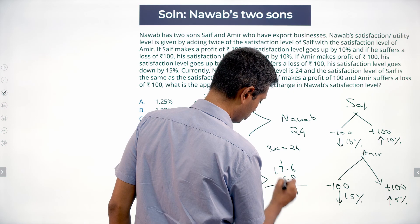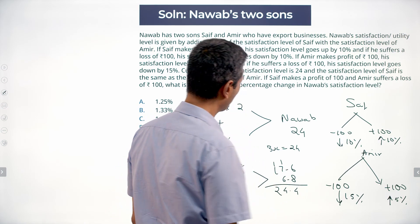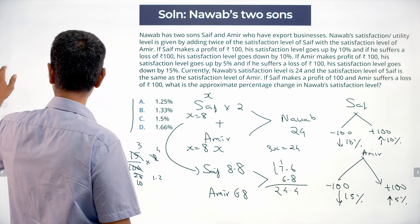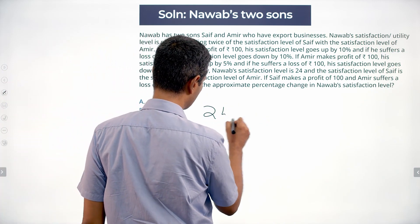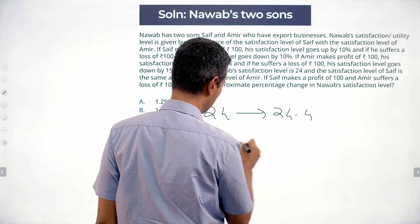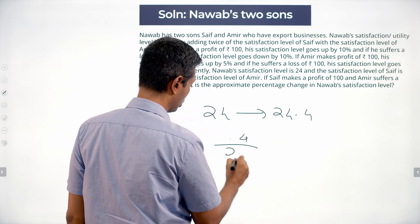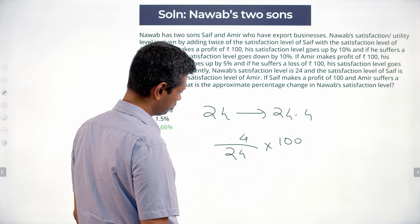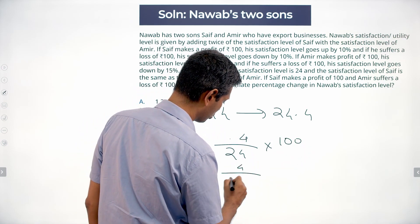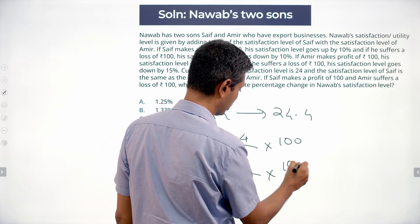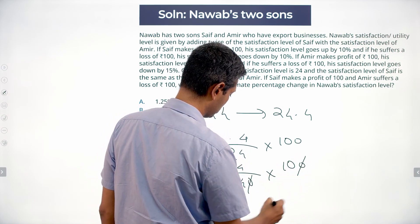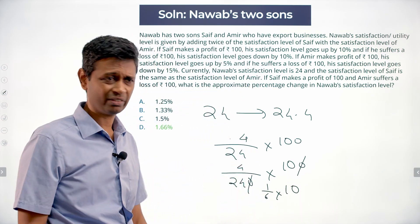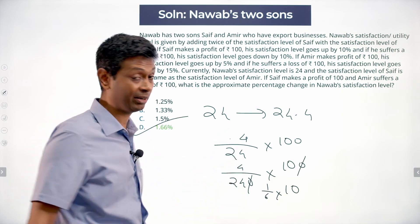17.6 + 6.8 = 24.4. So Nawab goes from 24 to 24.4. The percentage change is 0.4/24 × 100 = 4/240 × 100 = 1/6 × 10, which is approximately 1.67%.